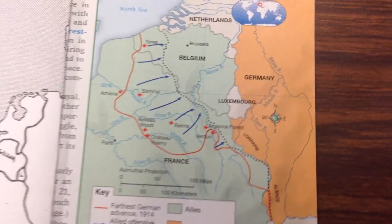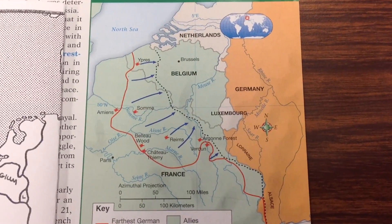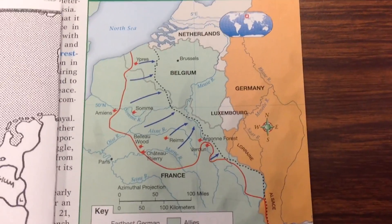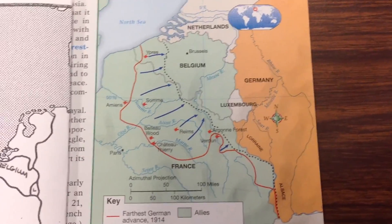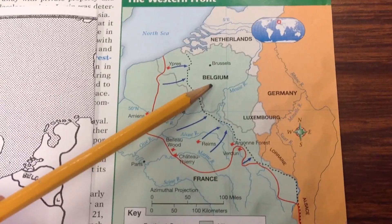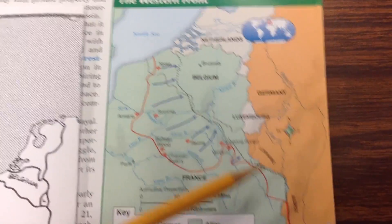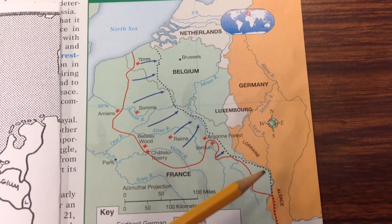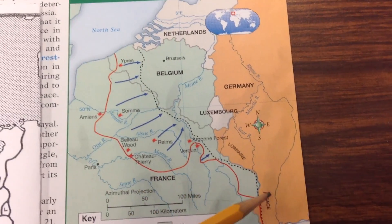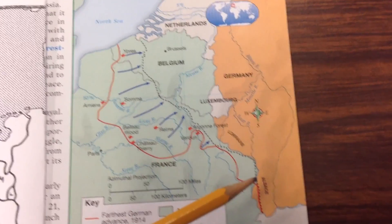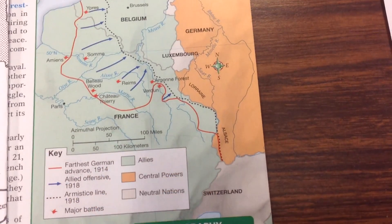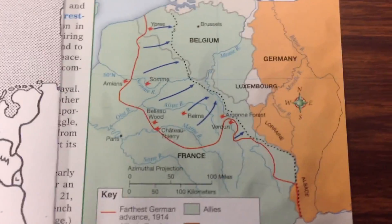So we're going to be using this map to do it. Before we start labeling, we have to get our bearings. We want to look at where Belgium is, where Luxembourg is, and then this is going to be Germany, and then down here is Switzerland. And then we want to find Paris — Paris is right here.